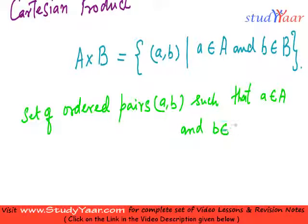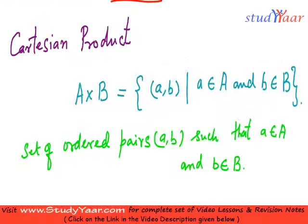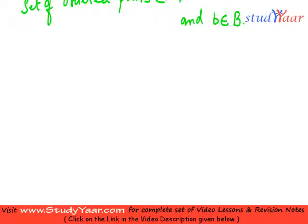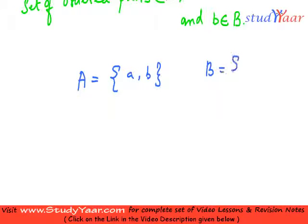Let us take an example to understand what exactly we mean by this. Let us suppose that A is equal to {a, b}, and B is equal to {1, 2, 3}.